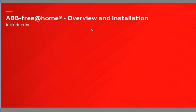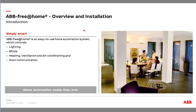ABB Free at Home is an easy-to-use home automation system. Like KNX, we have here a system for home automation, especially for the residential segment. We have the main applications relevant in the residential area: lighting, blinds, heating, ventilation and air conditioning. We also have the possibility to add our door communication system from ABB, the Welcome system, to Free at Home. The easiness of the system is the core aspect of Free at Home.